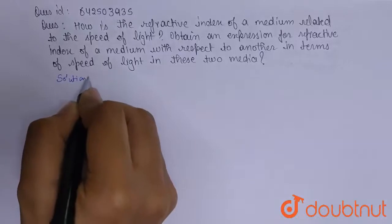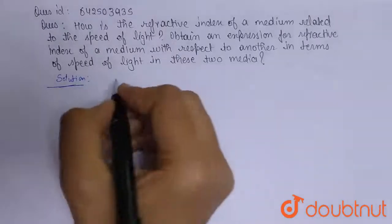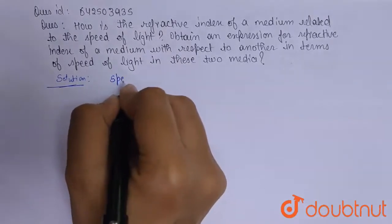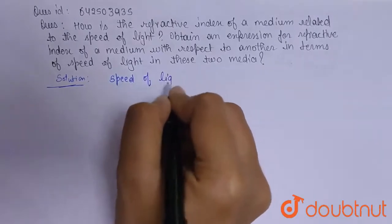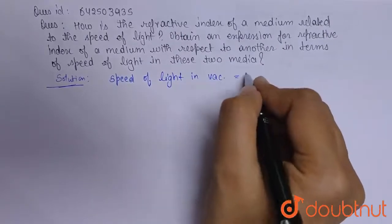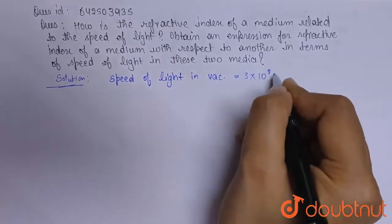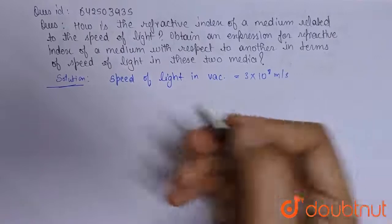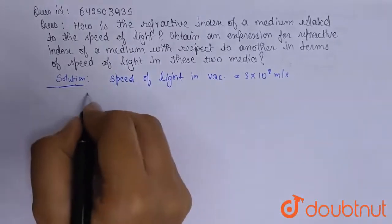We know the speed of light in vacuum is 3 × 10^8 meter per second, that is a constant, so let's say